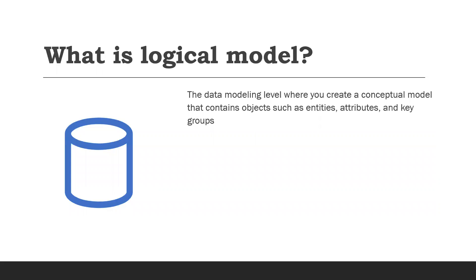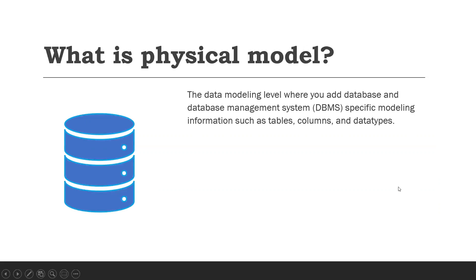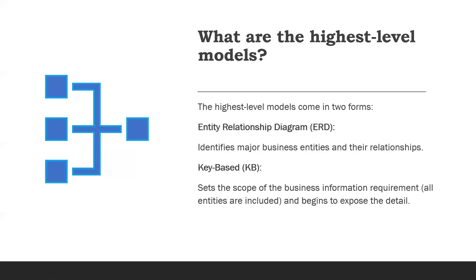What is a logical model? The logical data modeling level is where we create a conceptual model that contains objects such as entities, attributes, and key groups. What is a physical model? The physical data model is the level where we add database and database management system-specific modeling information such as tables, columns, and data types.